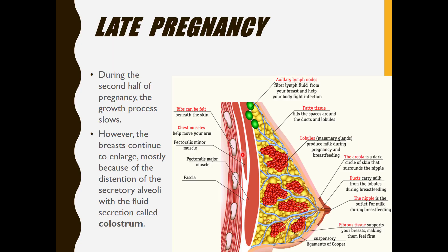In late pregnancy, during the second half, the growth process slows; however, the breast continues to enlarge mostly due to distension of the secretory alveoli with a fluid secretion called colostrum — the initial secretion before milk. Fatty tissue fills the spaces around the ducts and lobules. The areola is a dark circle of skin surrounding the nipple that increases in size. The ducts carry milk from the lobules during breastfeeding, and the nipple is the outlet for milk. Fibrous tissue, including the suspensory ligaments of Cooper between the breast lobes, supports the breast making it feel firm.